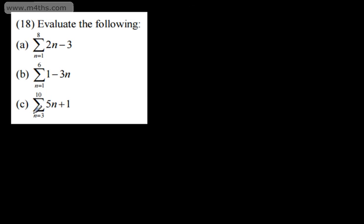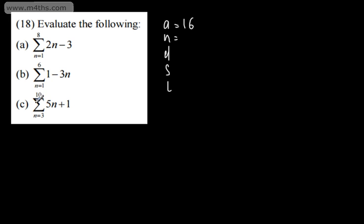The next one is the sum from n equals 3 to 10 of (5n plus 1). We have to be careful here — A, N, D, S, and L. N is starting at 3 this time. Substituting n equals 3: 5 times 3 plus 1 gives 16, so the first term is 16. Going from n equals 3 to 10 gives 8 terms. The common difference is 5. Substituting n equals 10 gives the last term as 51.